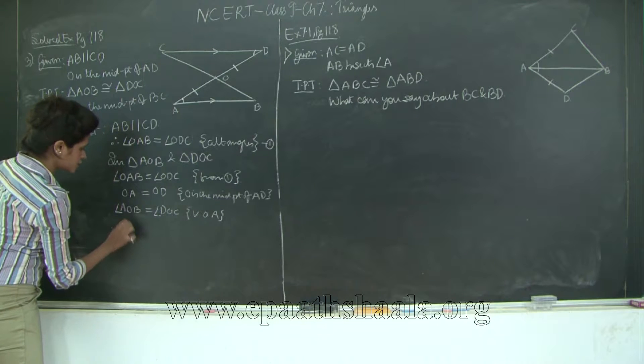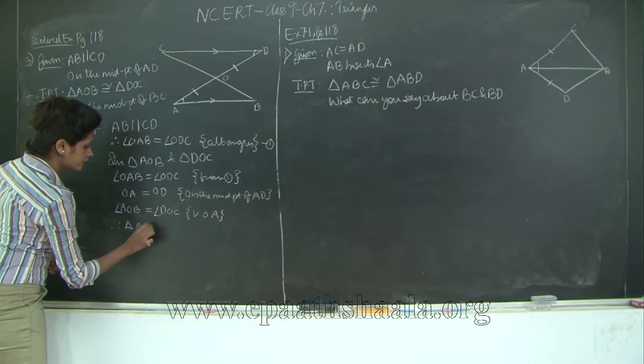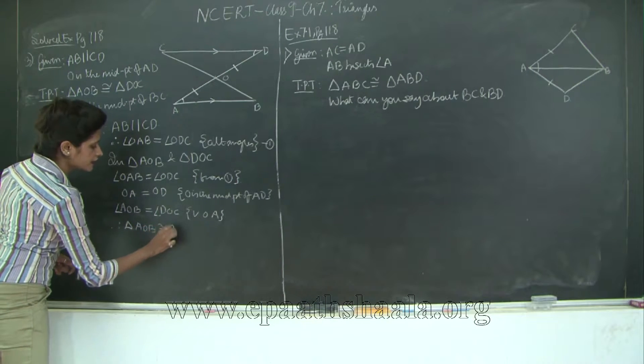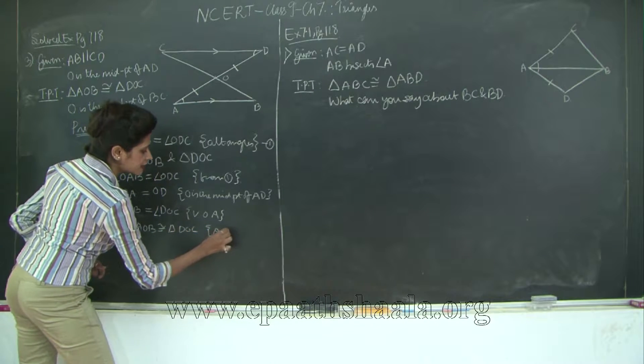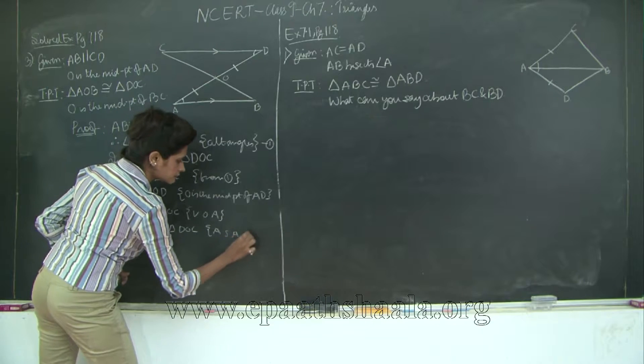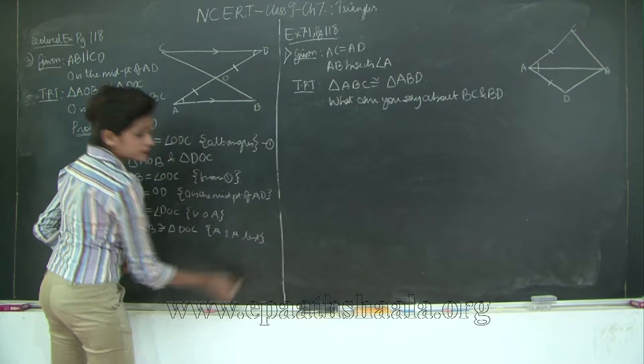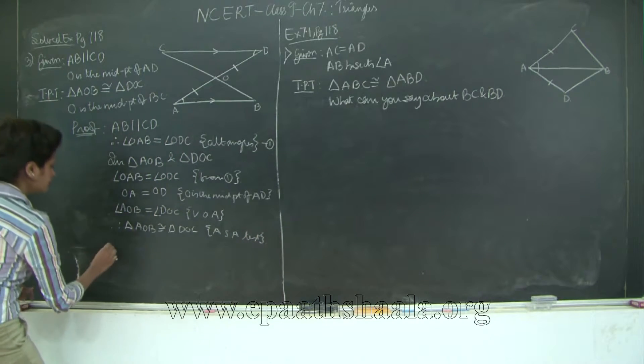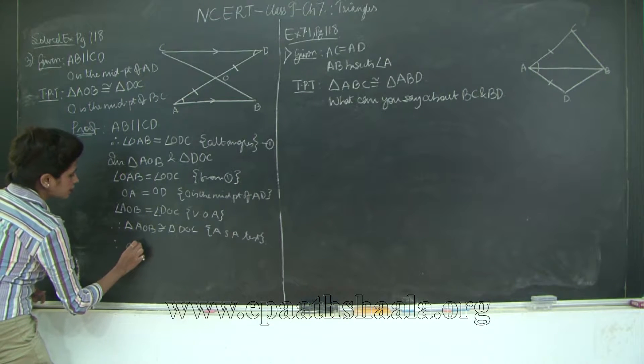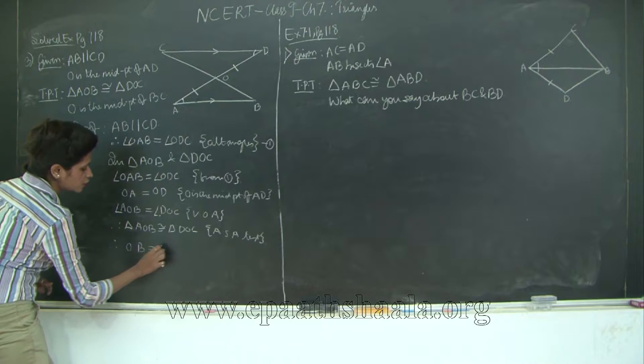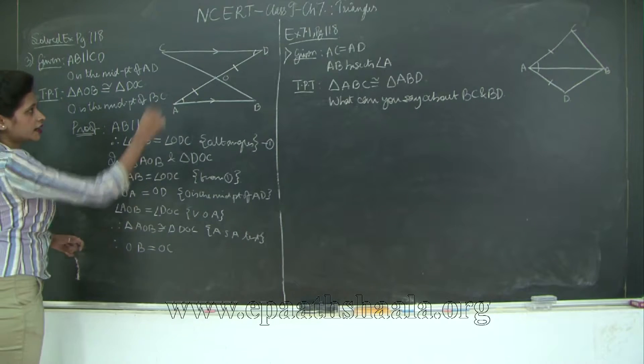Therefore I can say triangle AOB is congruent to triangle DOC by the ASA test. Therefore what can I say? OB is equal to OC, correct?